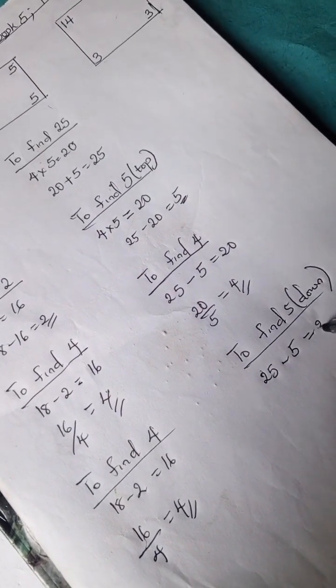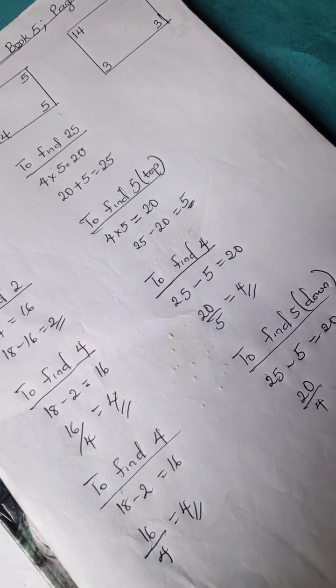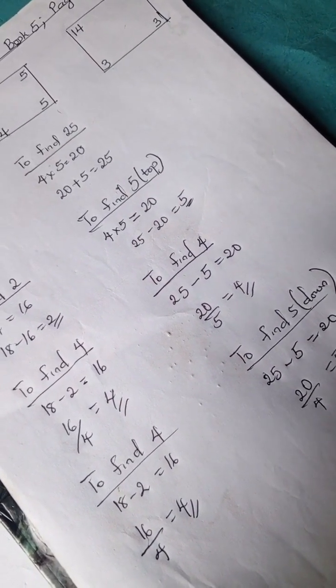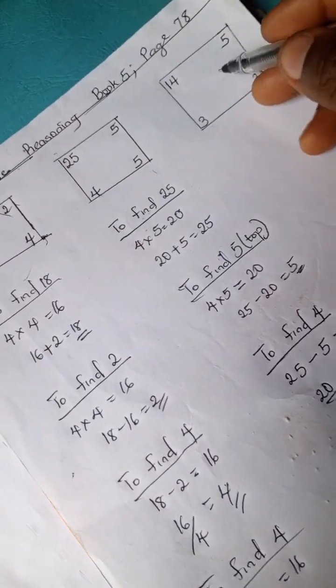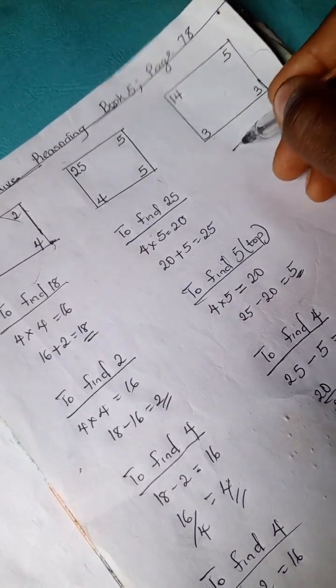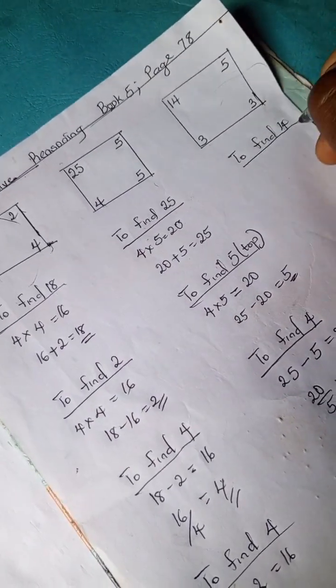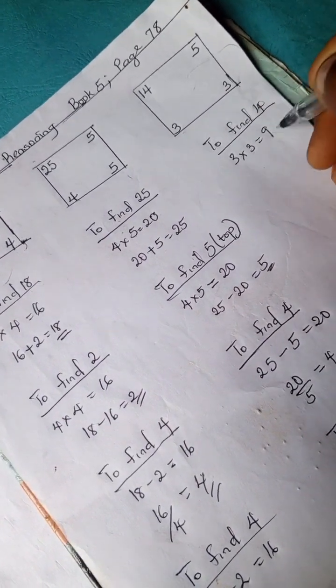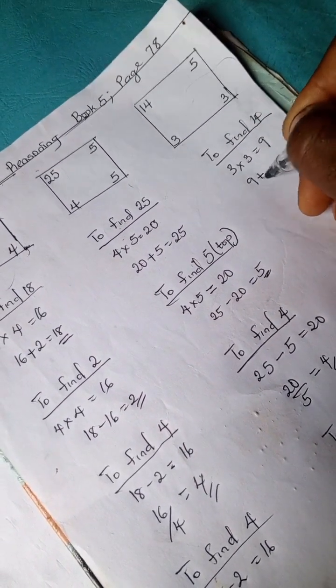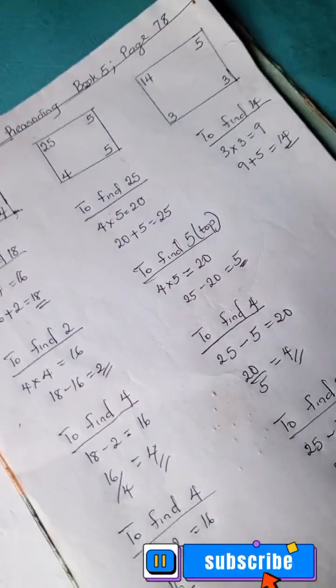All right, so if you apply the same principle here you will definitely get the same answer. So we can just try out to find 14. 3 times 3 times 3 is 9. 9 plus 5 is 14. All right, so please do well to subscribe to this channel for more quantitative reasoning.